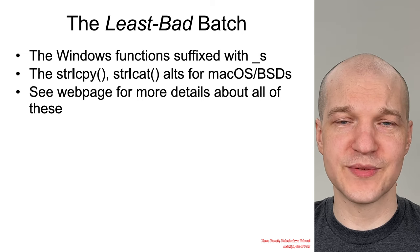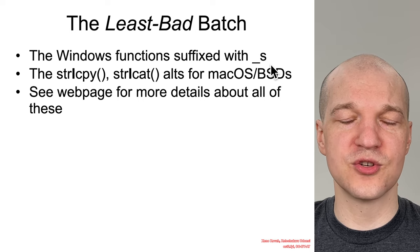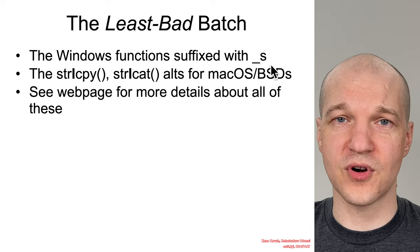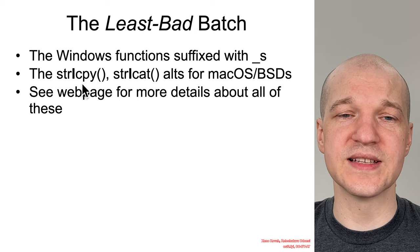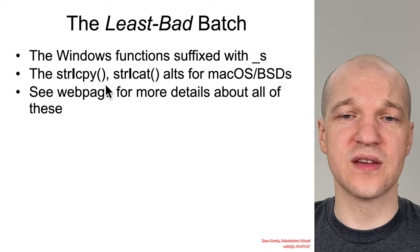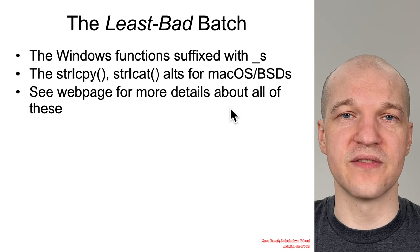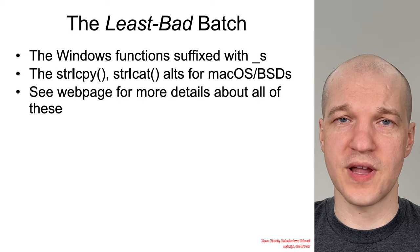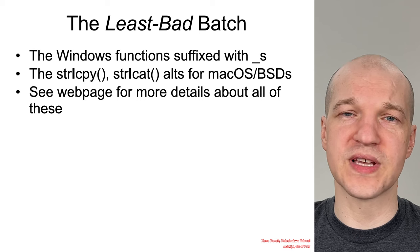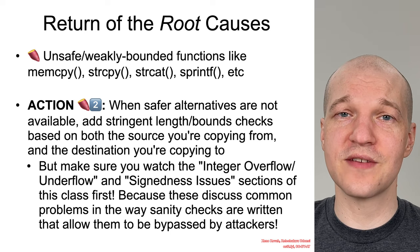What I consider the least bad batch are things like the Windows _s suffixed functions, where they try to provide more explicit constraints on the bounds of the buffers you're copying to and from. There's also on macOS and some BSDs, strlcpy (string copy for length), which is a more secure and better alternative to the 'n' versions. When it comes to safer API alternatives, we have more details on the webpage so you can figure out what makes the most sense for your particular execution environment. That was sweet potato one guidance: use the safer alternatives when they're available.